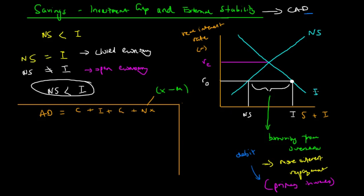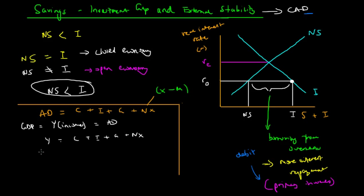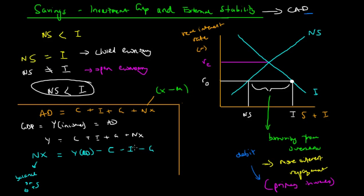We also know that GDP can be calculated by income, which should be the same as aggregate demand in an economy. Since aggregate demand equals income, we can rewrite this as Y = C + I + G + NX. If we rearrange this equation to make net exports the subject — since net exports relates to the balance on goods and services — we get: NX = Y − C − I − G.